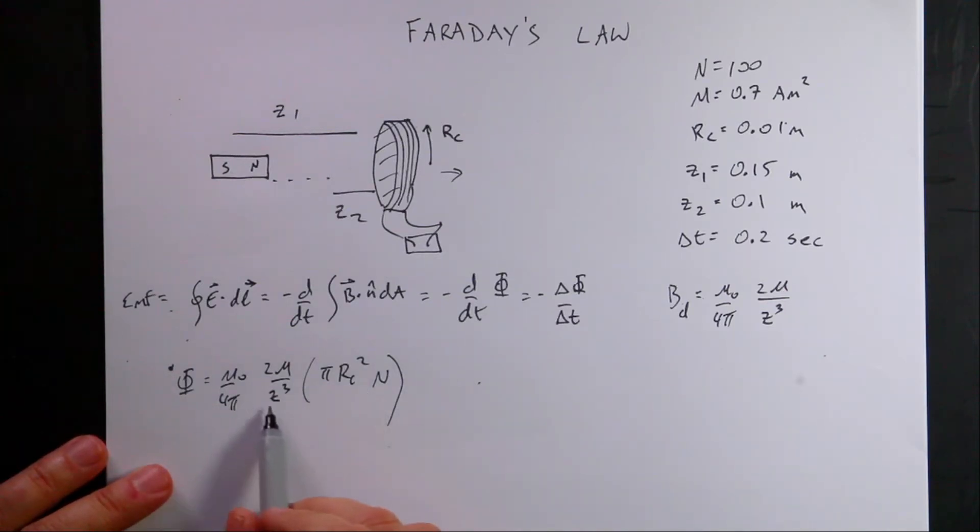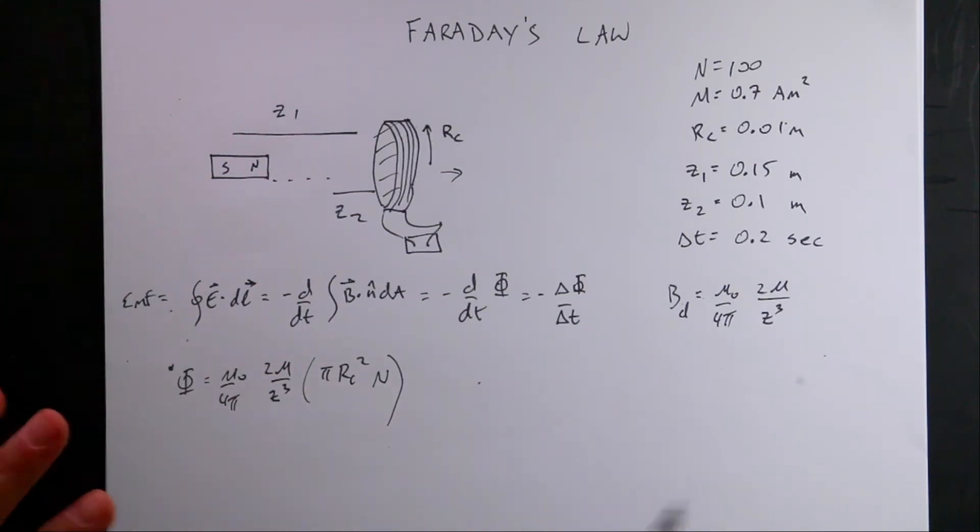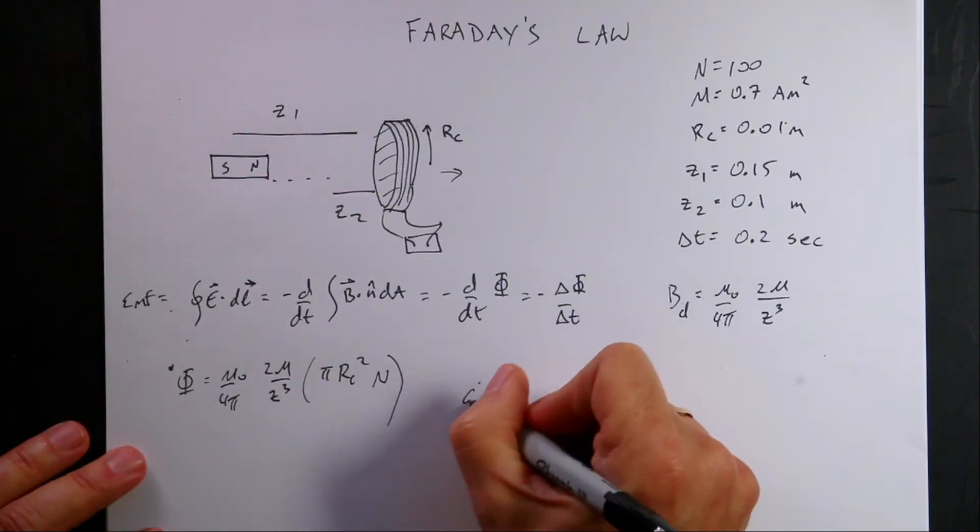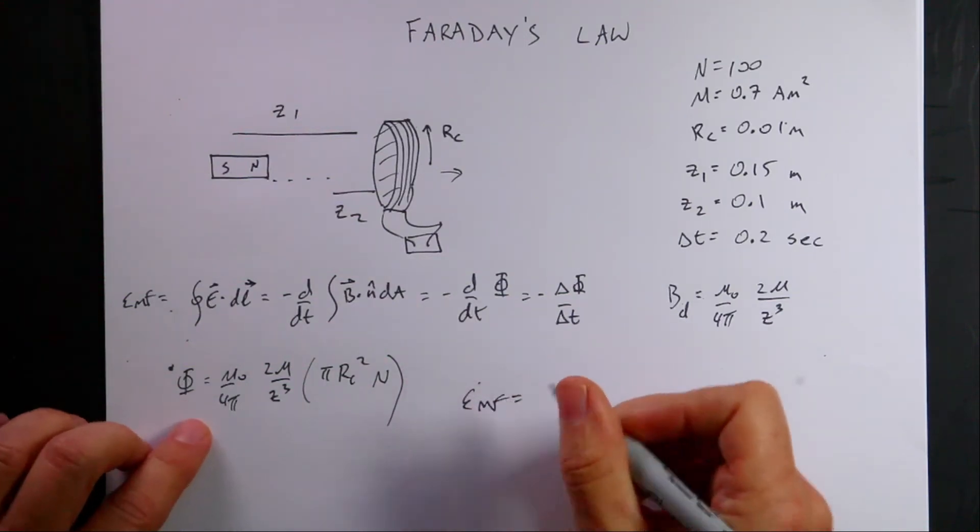So that's the flux in terms of Z. So if I want to find flux 1, I put in Z1. If I want to find flux 2, I put in Z2. Simple. So now I can get the EMF.